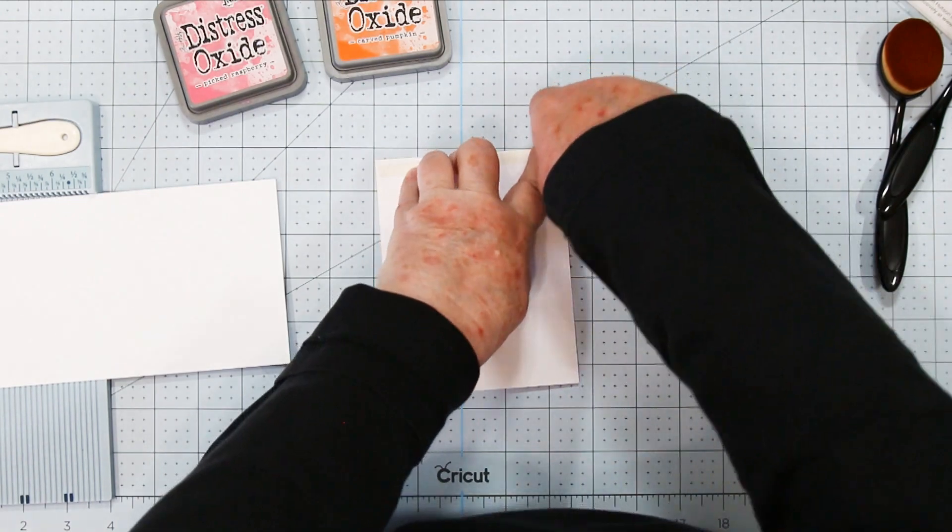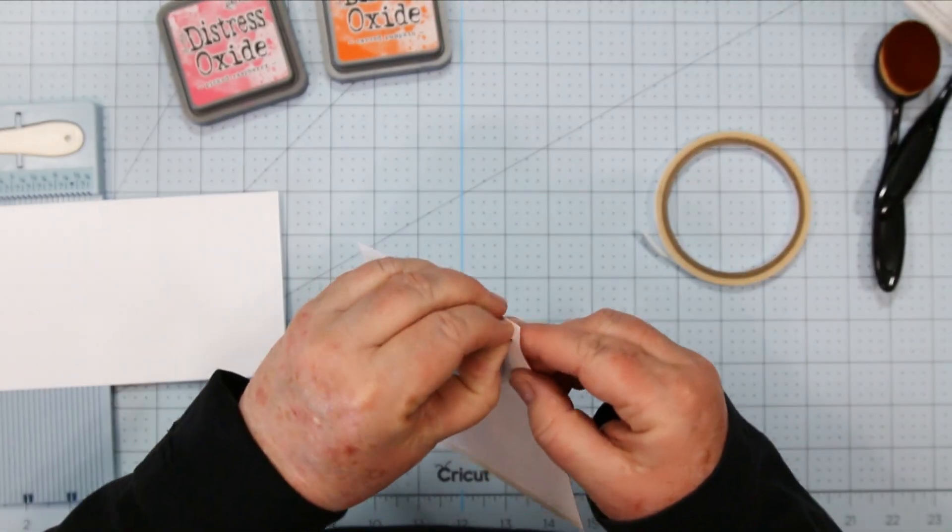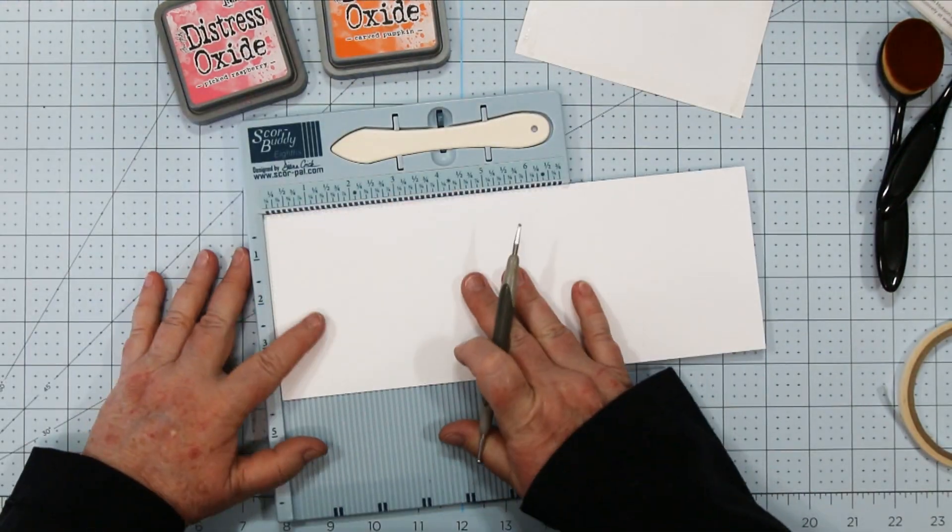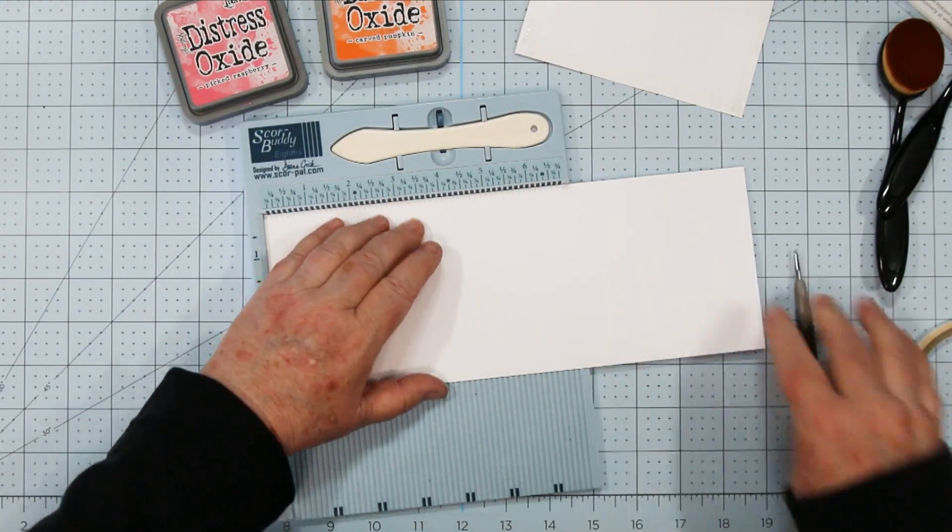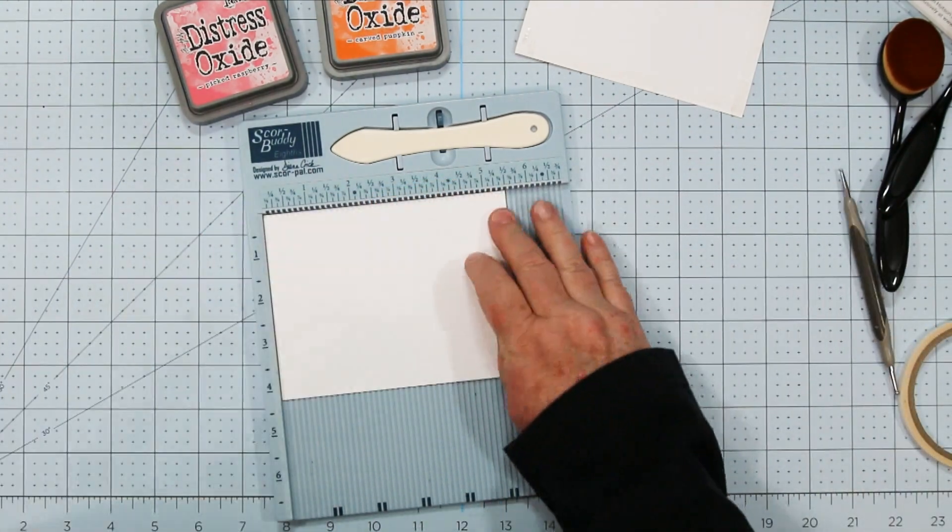I'm using score tape to attach my card front to my card base because it's really nice and strong. I really like using this stuff. Peeling back the protective cover and then I'm getting my card base ready. Using my score buddy to score and fold my top folding A2 white card base.